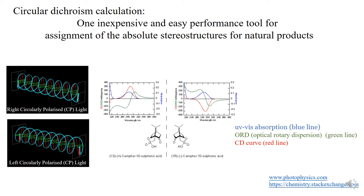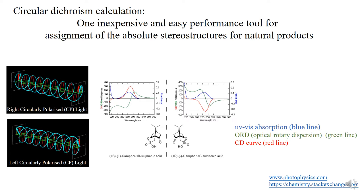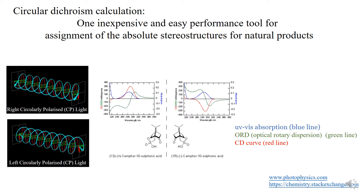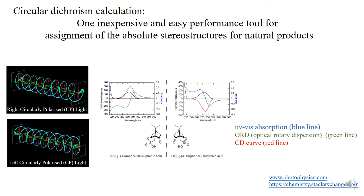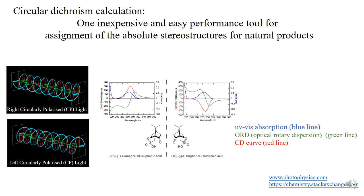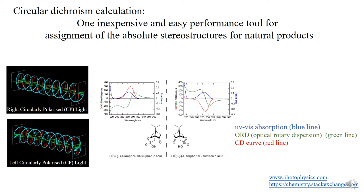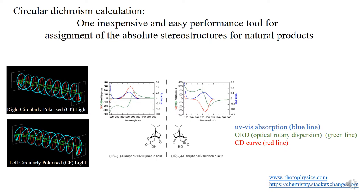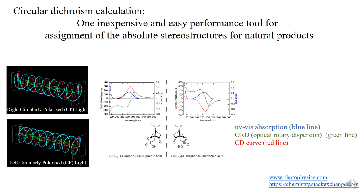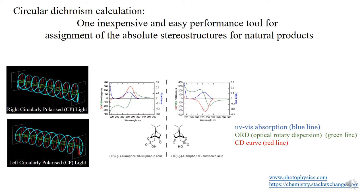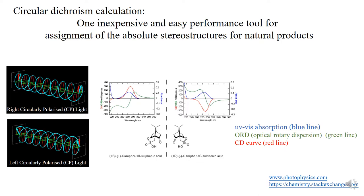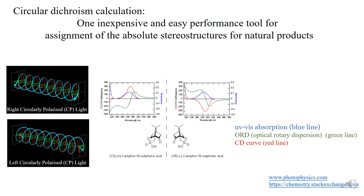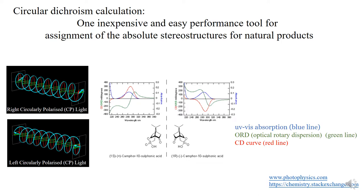Hello, everyone. Today, let's discuss the electronic circular dichroism diagram, calculations and their applications in the assignment of the absolute stereostructures for natural products.